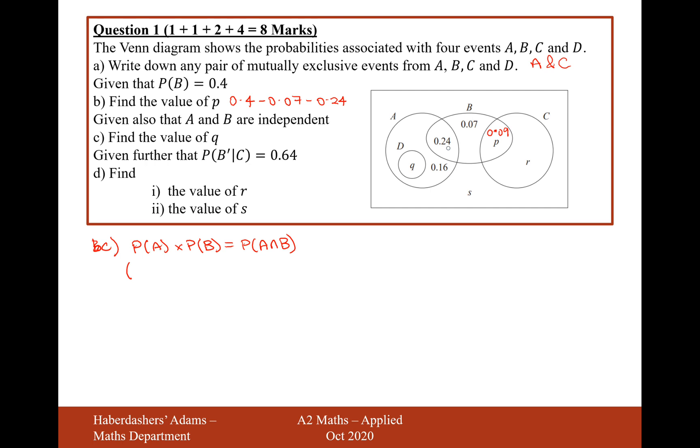So the probability of A is going to be 0.16 add 0.24 add Q. So that's going to be 0.4 add Q. That's the probability of A. That's all of circle A. Multiplied by the probability of B, which is 0.4.